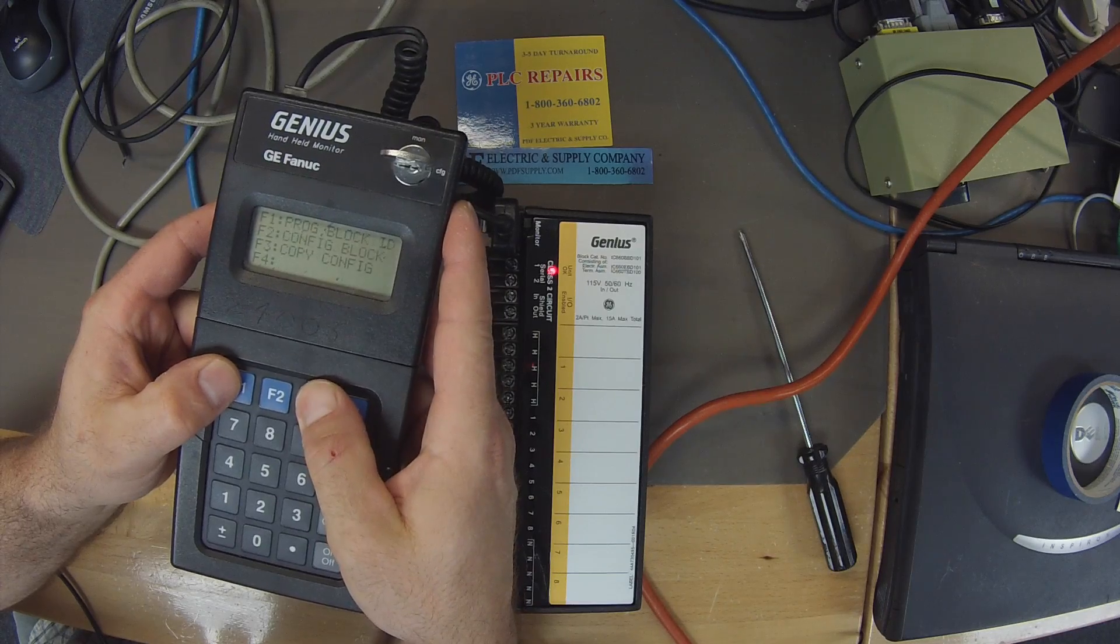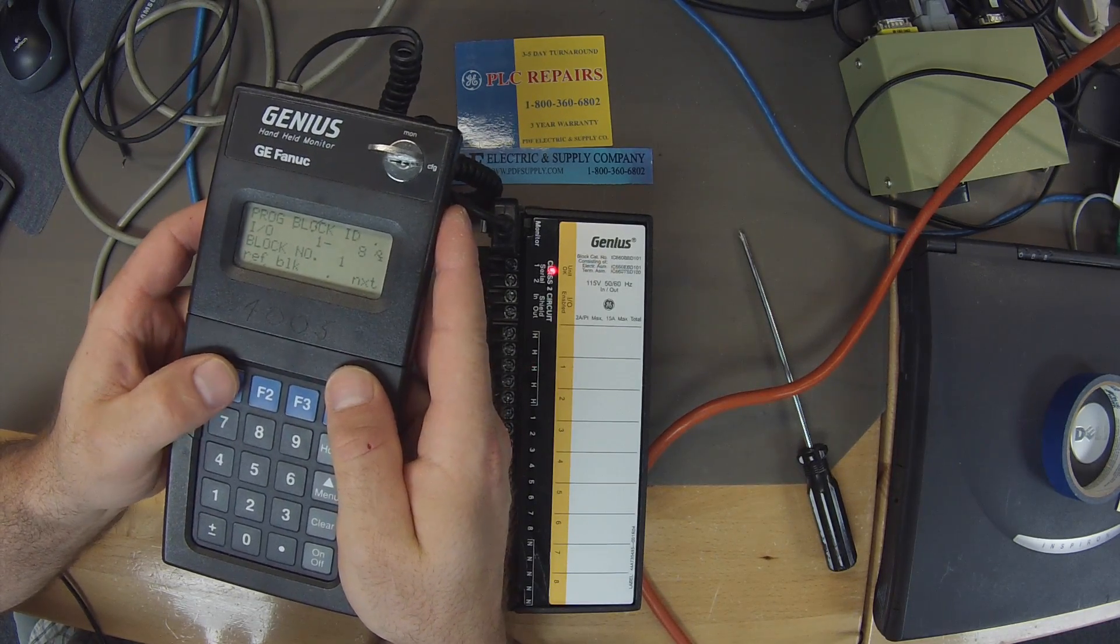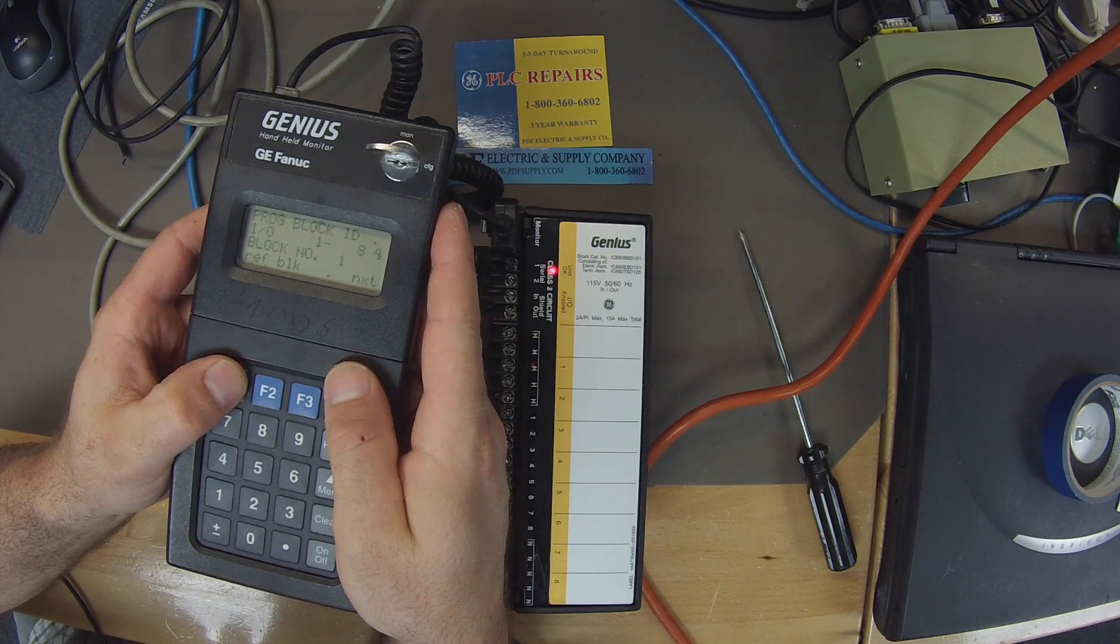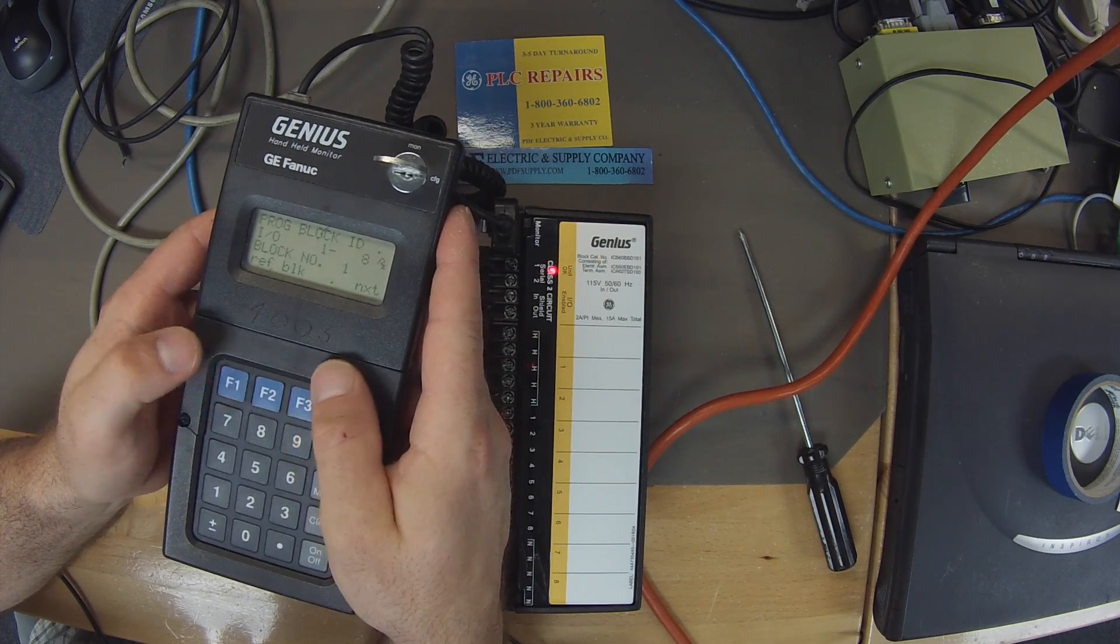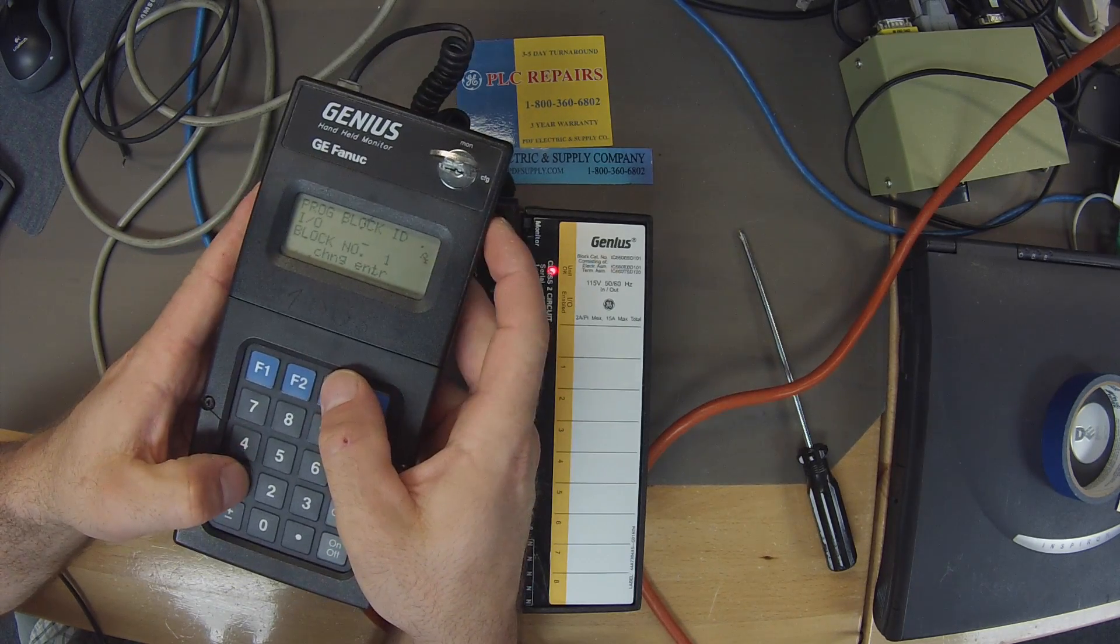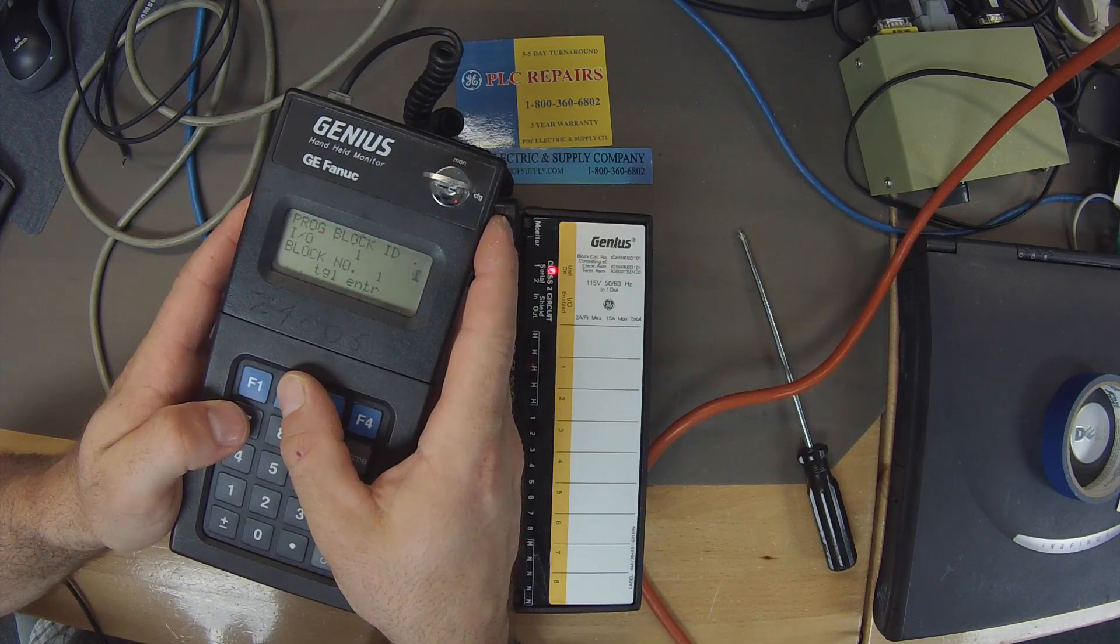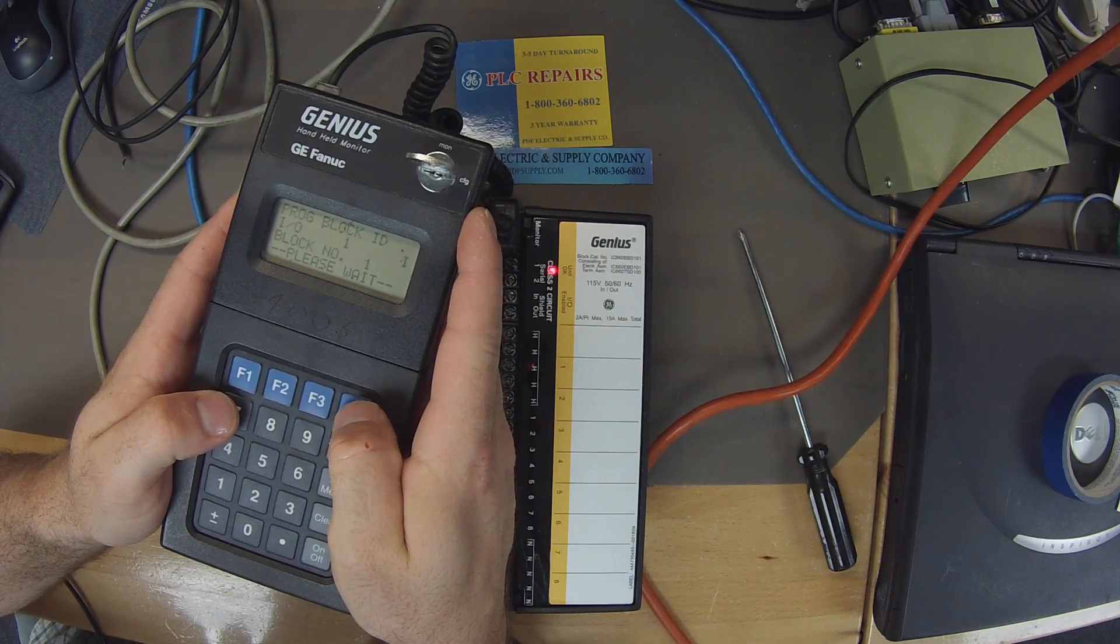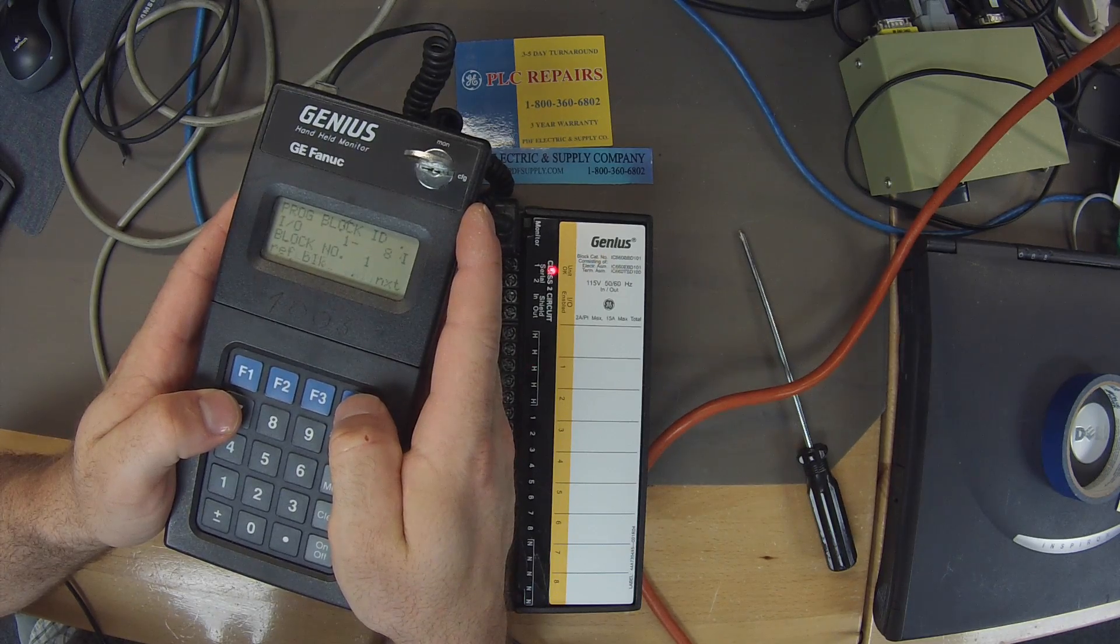I'm going to go back to home, configuration, F3, program block ID, F1. It's currently configured as input output 1 through 8 and it's block number 1. Block number 1 is fine to begin this test, but we're going to go to reference, F1, enter, 1, enter, and we're going to toggle this input output mode to just strictly input, and we're going to test the inputs first, so enter, and then it configures it.